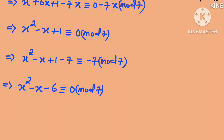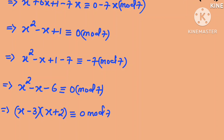If we factorize x squared minus x minus 6, we obtain (x minus 3)(x plus 2), which is congruent to 0 in mod 7.